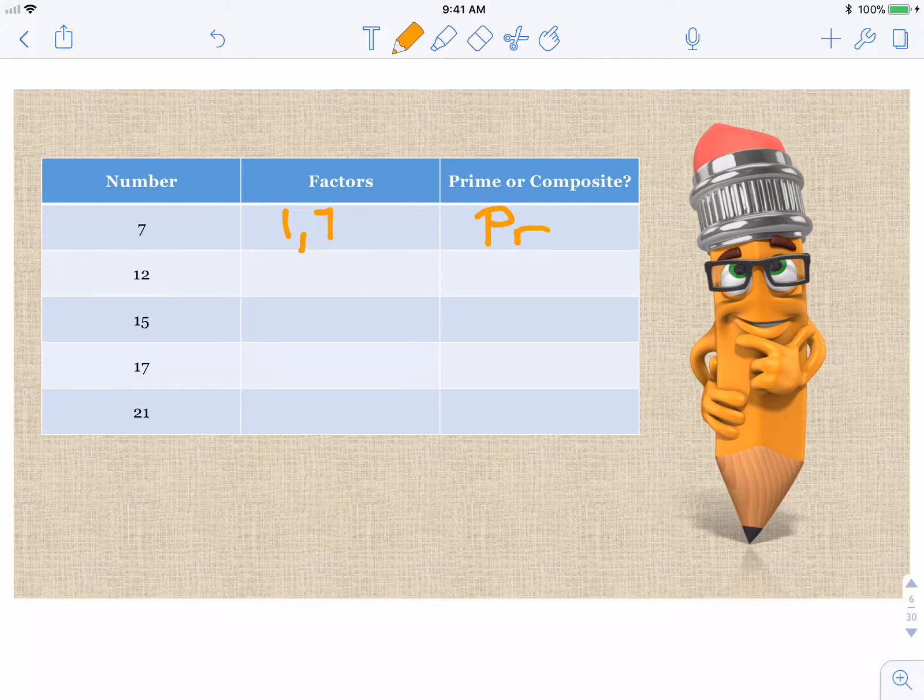So if I list the factors of seven, I would have one, seven. Two? Nope. Three? Nope. Four? Nope. Five? Nope. Six? No. And then we're back to seven. So we know that we've listed all the factors of seven. One and seven are the only numbers that go into seven. So that is a prime number.